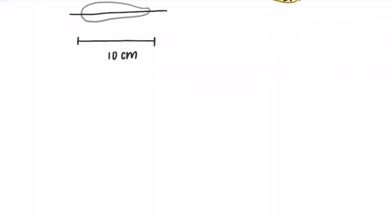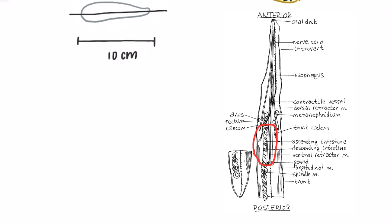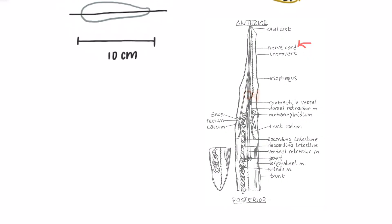Sipuncula are symmetrical and form two cell layers. They contain a true coelom with a U-shaped gut for its anus and mouth. It has a simple brain with a ventral nerve but no circulatory or respiratory organs.